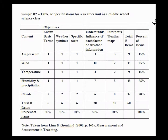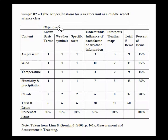Let's take a look at another table of specifications — this one is for a weather unit in middle school science. In the first column we have the content: air pressure, wind, temperature, and so on. And we have the objectives, or what we might call the new taxonomy, across the top: knows, understands, interprets.